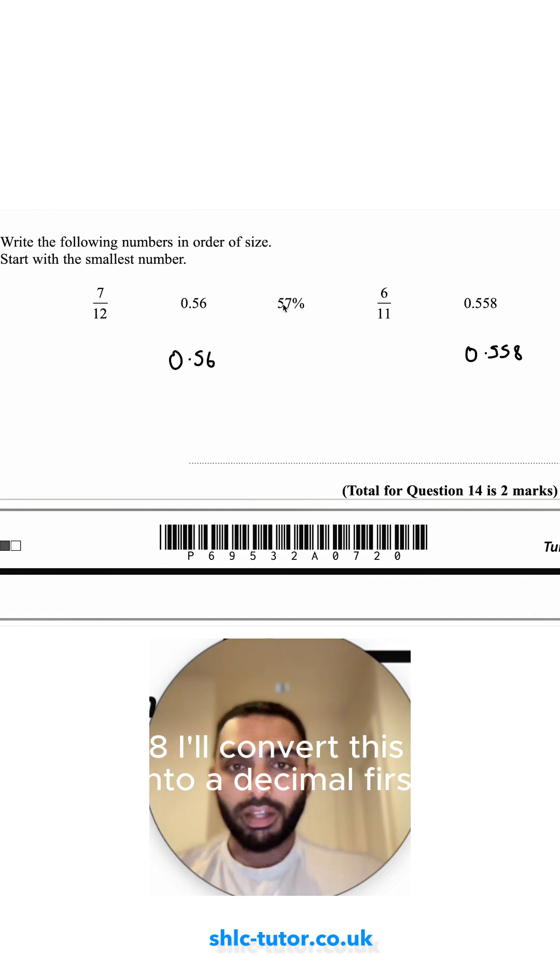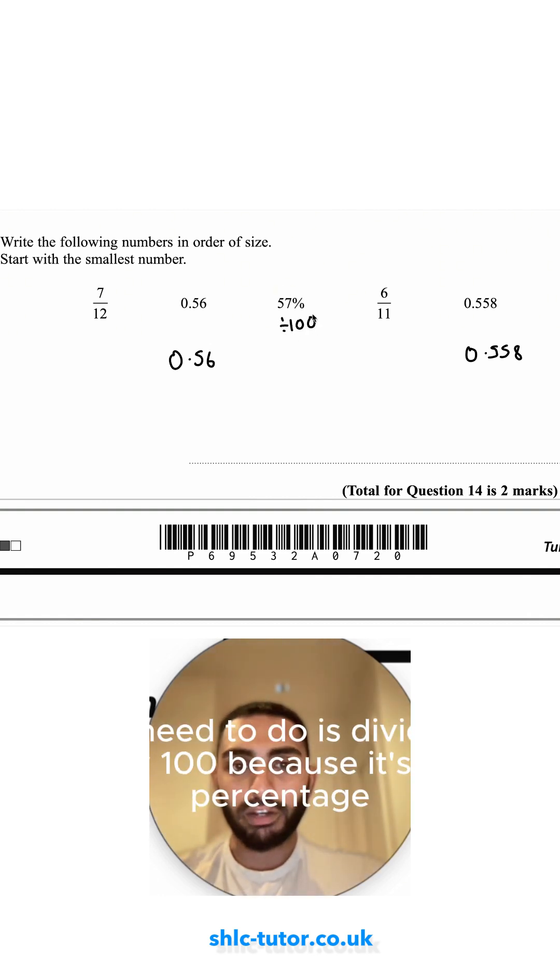0.558. I'll convert this one into a decimal first because I think it's the easiest. All I need to do is divide it by 100 because it's a percentage. So that would become 0.57.